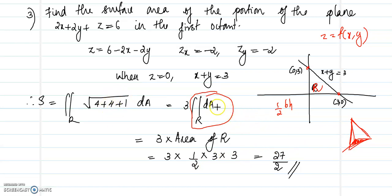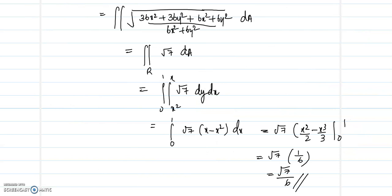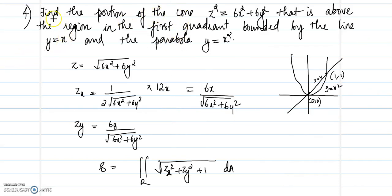Note: if you encounter a circle or standard region, you can directly use standard area formulas rather than recomputing the integral. The fourth problem is to find the surface area of the portion of the cone z² = 6x² + 6y² that is above the region in the first quadrant bounded by the line y = x and the parabola y = x².